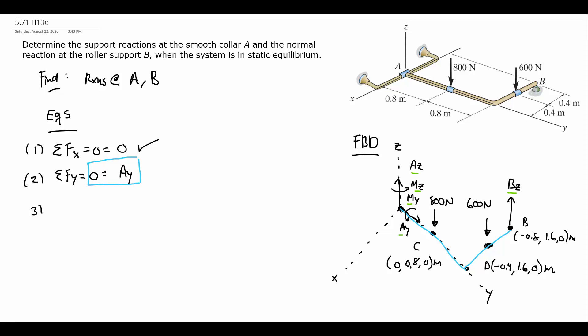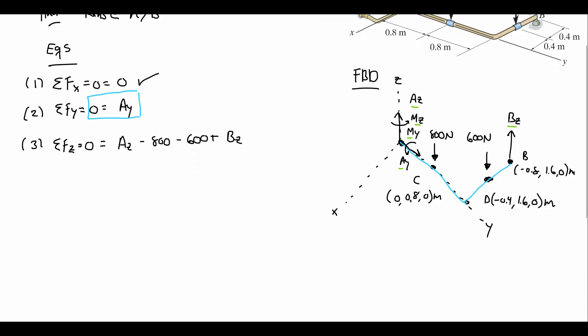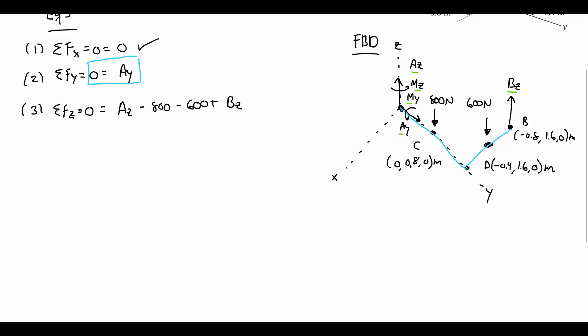In the Z direction: we have AZ, minus 800, minus 600, and plus BZ equals zero. In equation three we have two unknowns, AZ and BZ, so I won't try to solve it yet — I'll move on and write more equations. So far we have one of our five unknowns solved for.